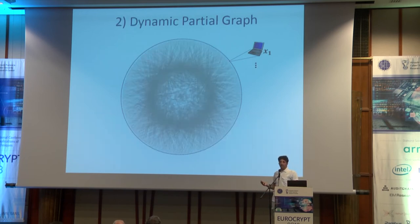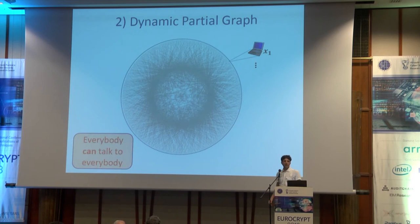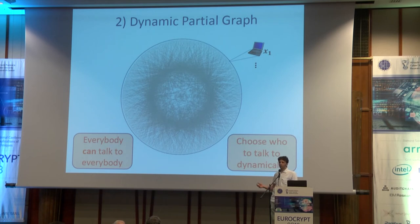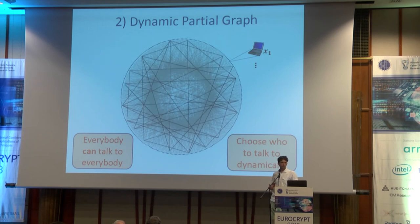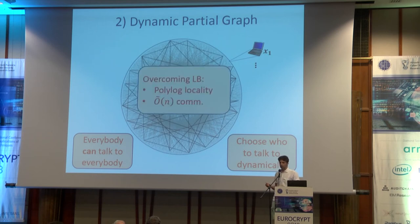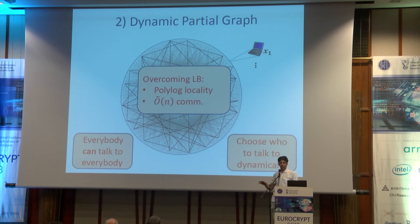A more recent methodology is the dynamic partial graph model. Here, everybody can talk to everybody else, but they choose who to talk to dynamically during the protocol. In this model, we can get around many of these lower bounds. We can get secure computation where everybody talks only to polylog many other parties, and broadcast where the communication complexity is linear up to polylog factors.